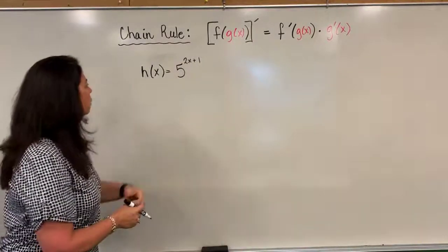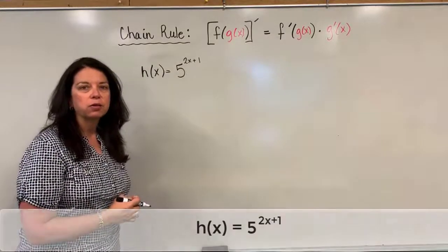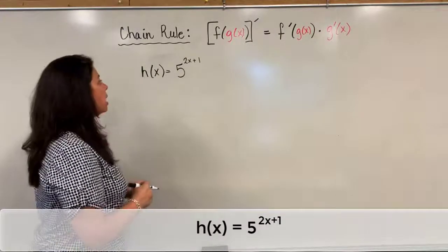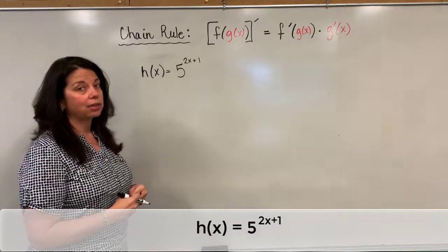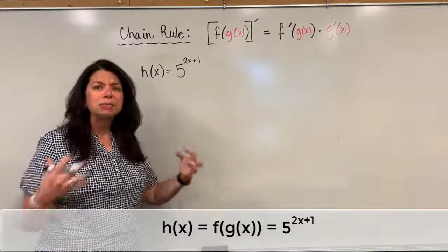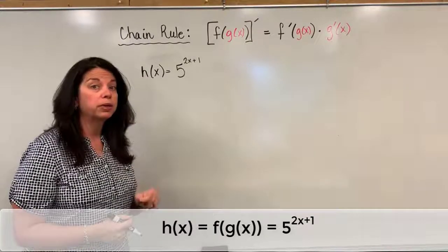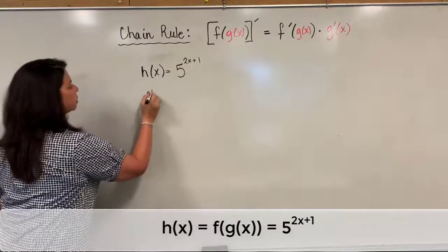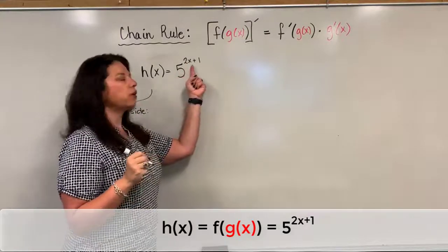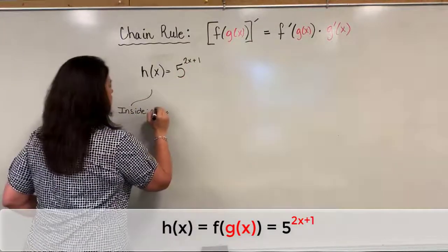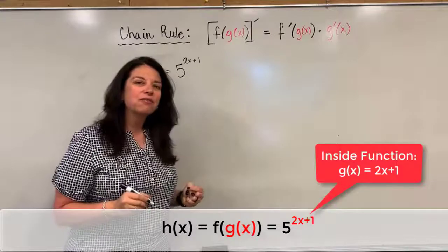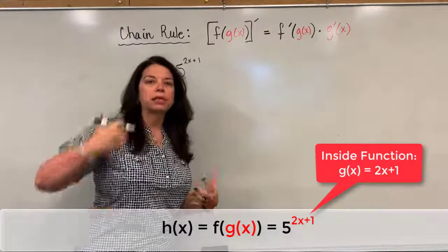The problem we're going to work with now is h of x equals the exponential — five to the power of two x plus one. When we look at this function, you might not recognize that there's actually a composition of functions here because there's no parentheses or brackets to distinguish that there are two parts, but there really are. We've got what I'm going to consider the inside function, which is actually this power.